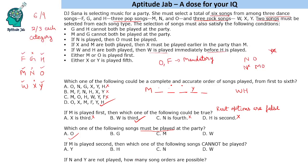Question 4: If m is played second, which of the following songs cannot be played? Since either m or o must be played first, and m is second, o must be the first song. The condition states if x and m are both played, x must be earlier than m. Since m is second, x would have to be first, but o is first — so x cannot be played.